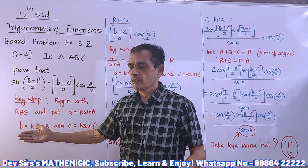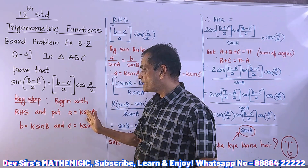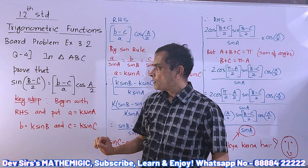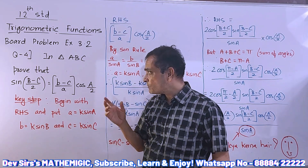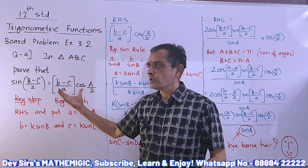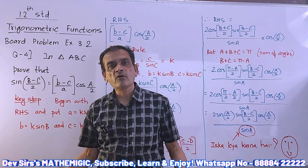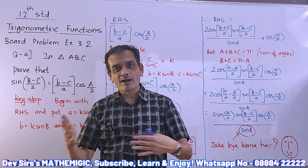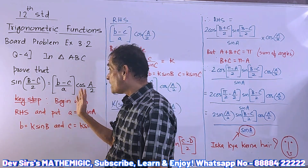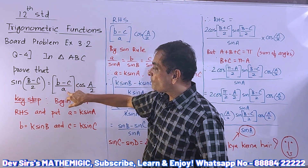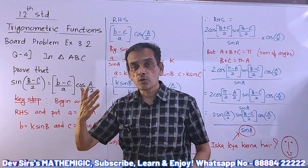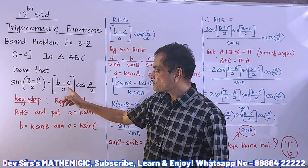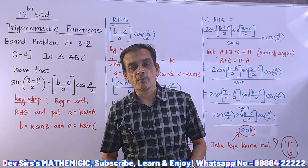The key step here: begin with the RHS and put a = k sinA, b = k sinB, c = k sinC. Why do we start with RHS? Simply because you have something to substitute there. On the left hand side, sin of (B minus C) upon 2 — there is no formula, you can't do anything. But if you start with the RHS, those small letters appear and you can use the sine rule.